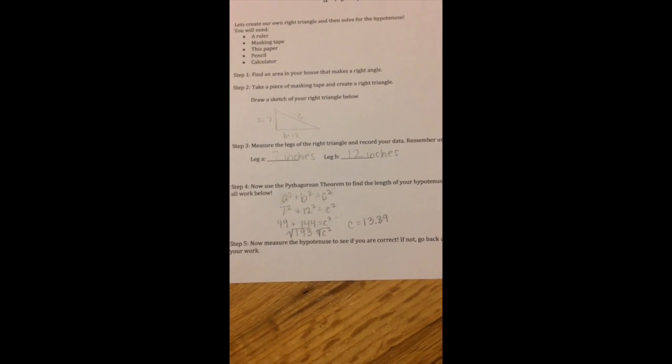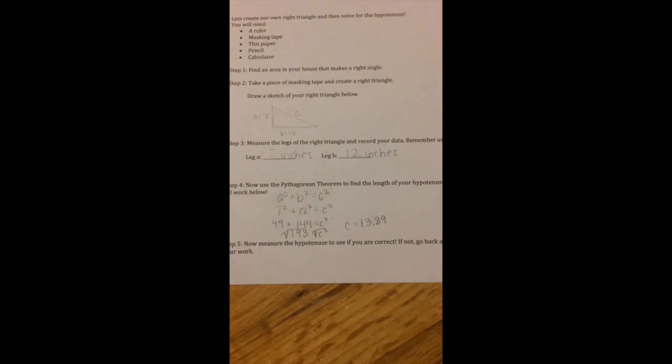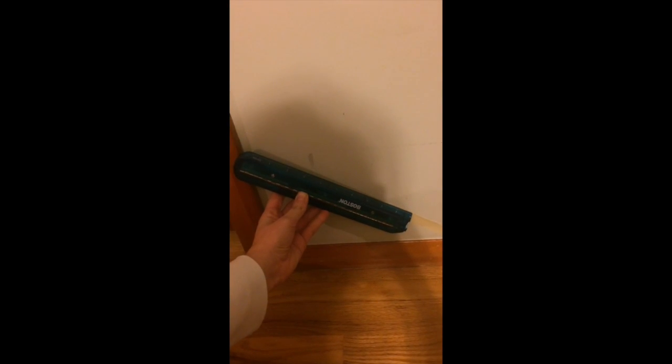Now go back and measure your masking tape, your hypotenuse. It should be what you got as your C value. I'm measuring my hypotenuse. That's 10 inches, plus an extra 3, 4.